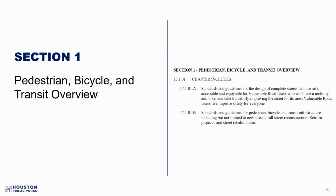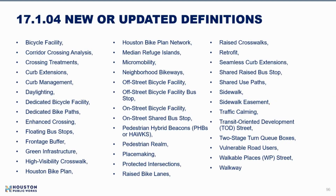Section 1 is the overview section, which now includes a number of new definitions. Over the five years since the last major Chapter 17 overhaul, the city has been building multimodal bicycle, pedestrian, and transit infrastructure around town, and it was time to standardize them so infrastructure looks consistent as multiple agencies and design firms work on these projects.